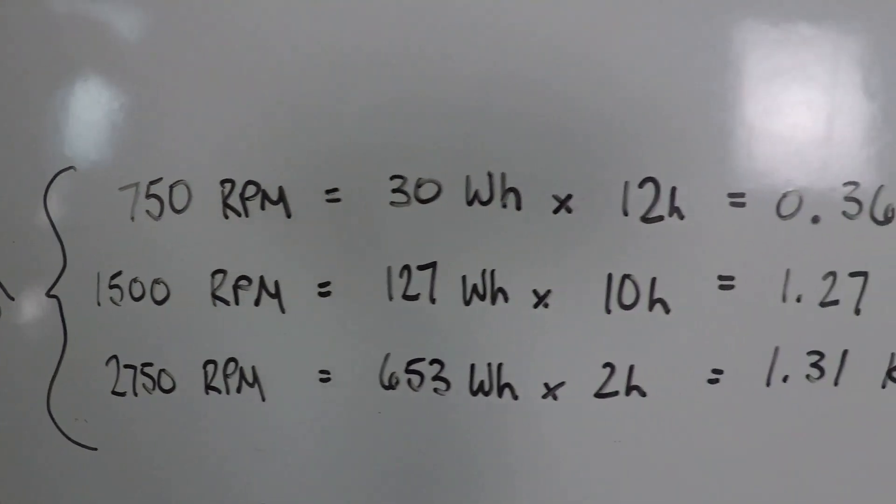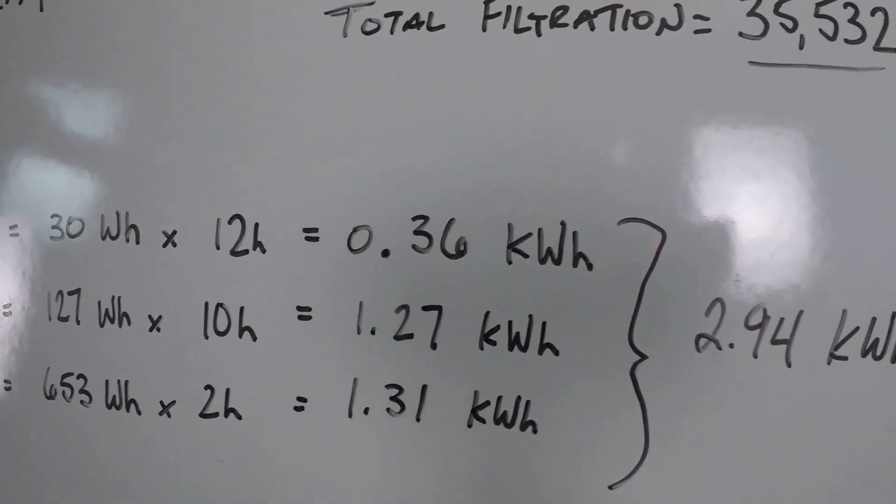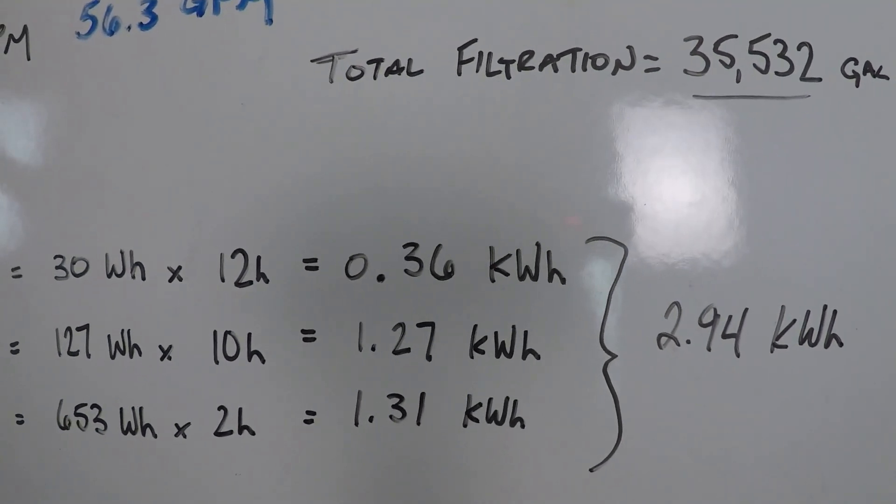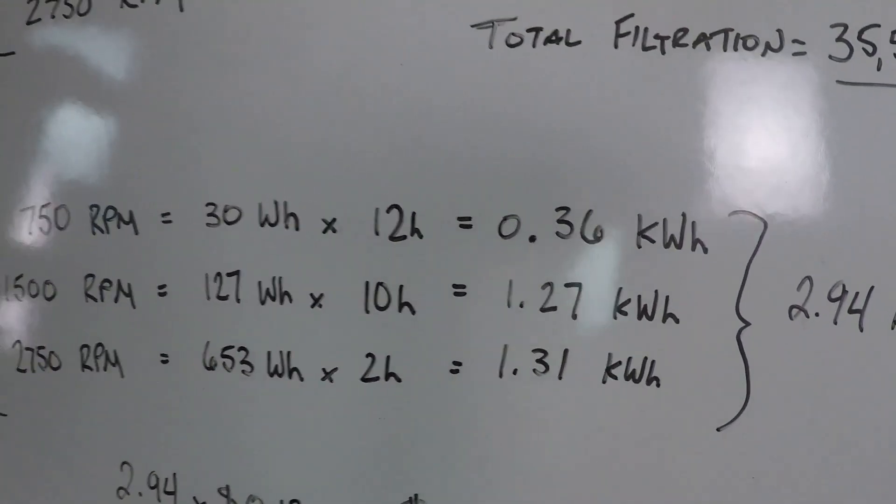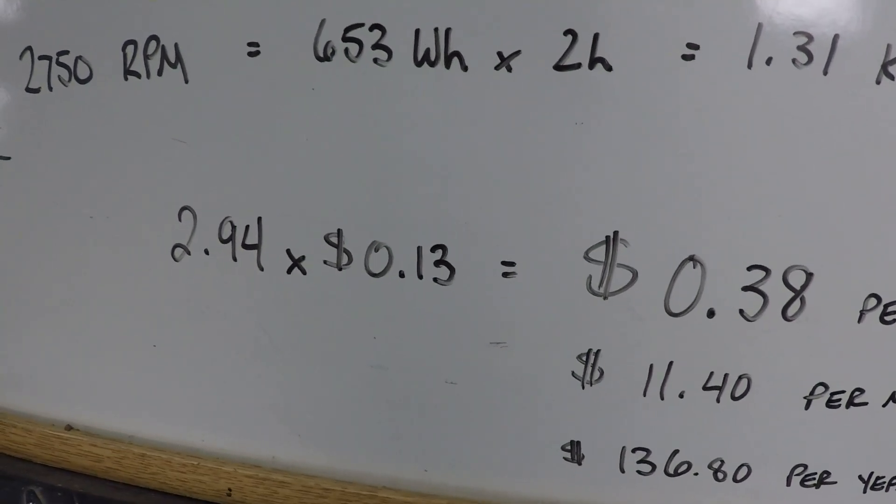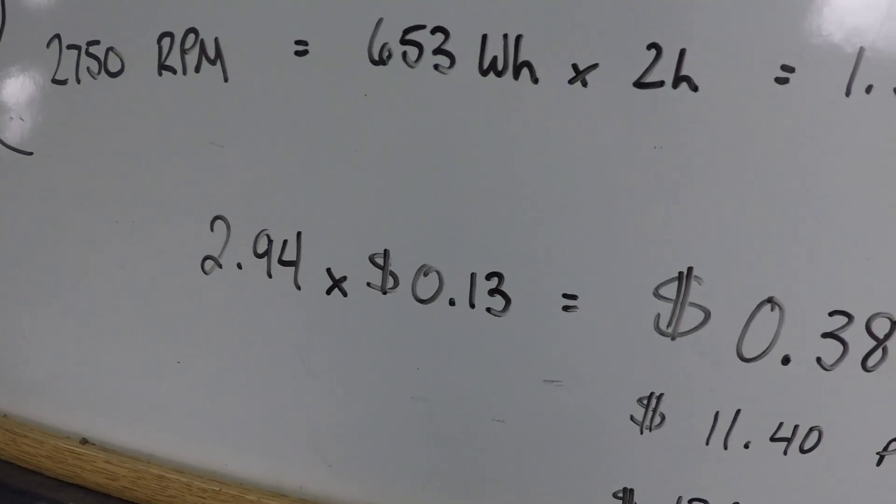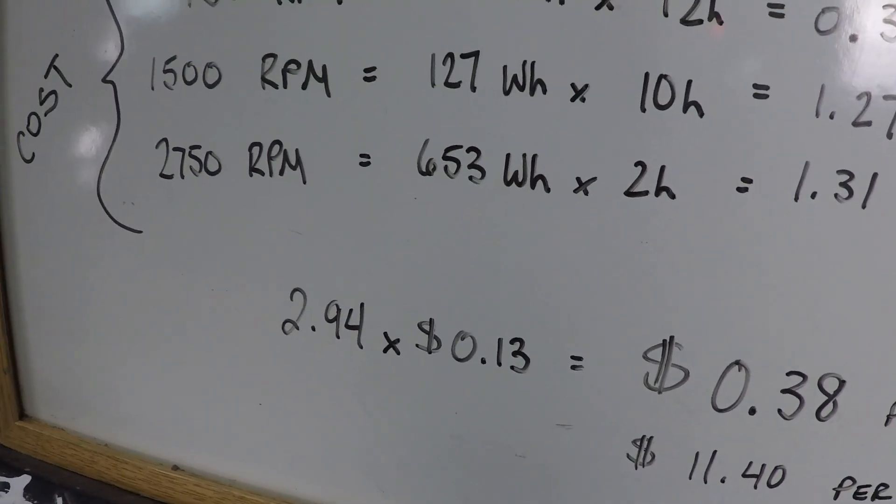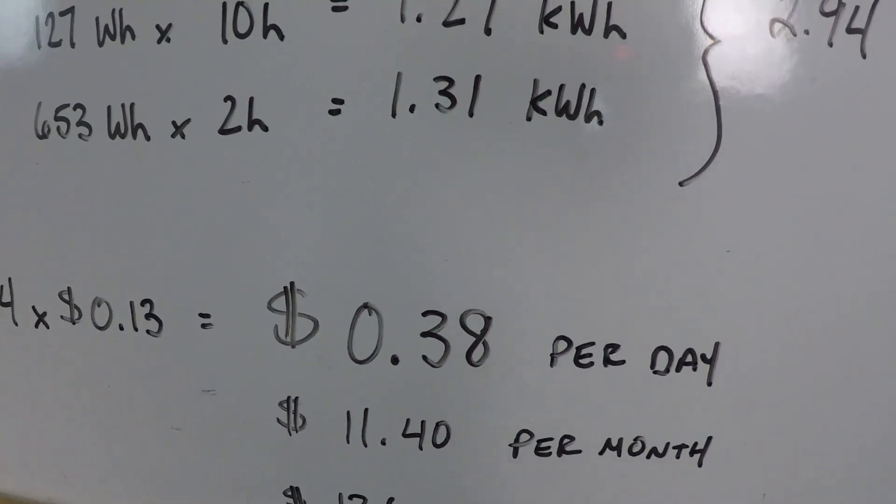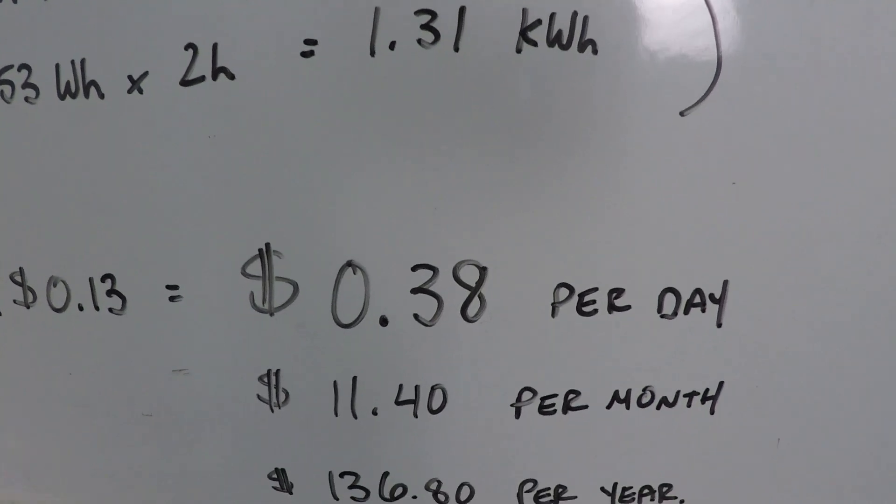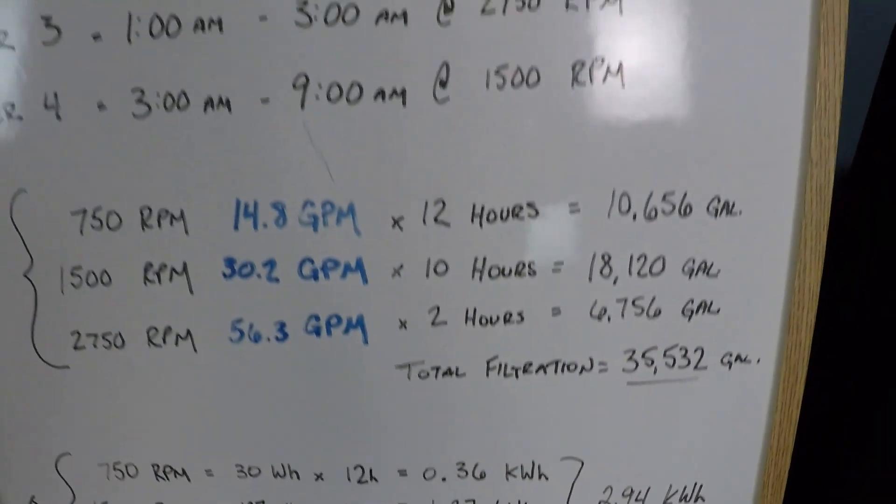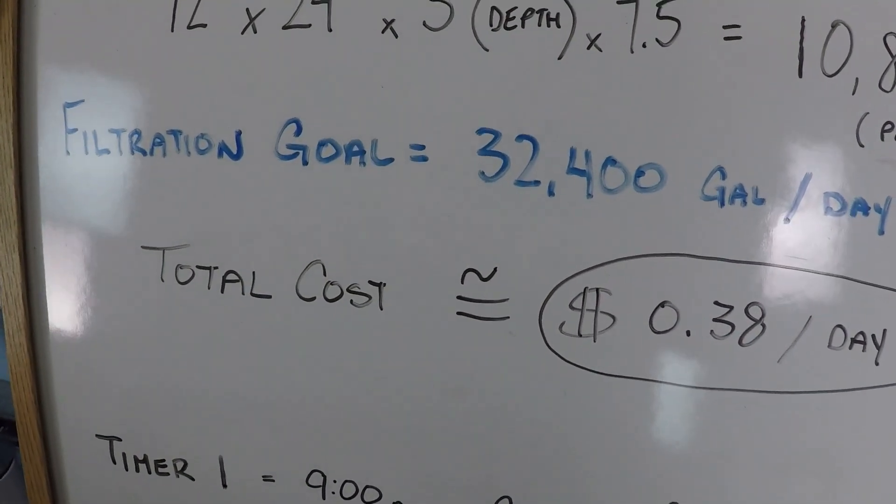So when you add up all the watt hours here, we'll get a total of 2.94 kilowatt hours of power consumption for this 24-hour schedule. Now, if you want to discuss the cost on that, you could calculate out each one using your variable rate for electricity. But the nationwide average for power consumption is about 13 cents per kilowatt hour. So we can do a quick calculation here. 2.94 times 13 cents. You're looking at about 38 cents per day, which is about $11.40 per month or about $136.80 per year.